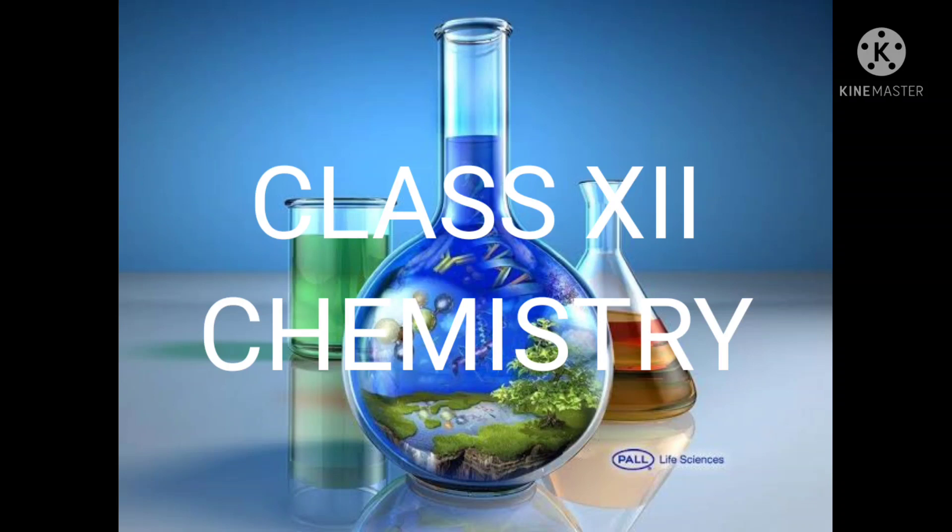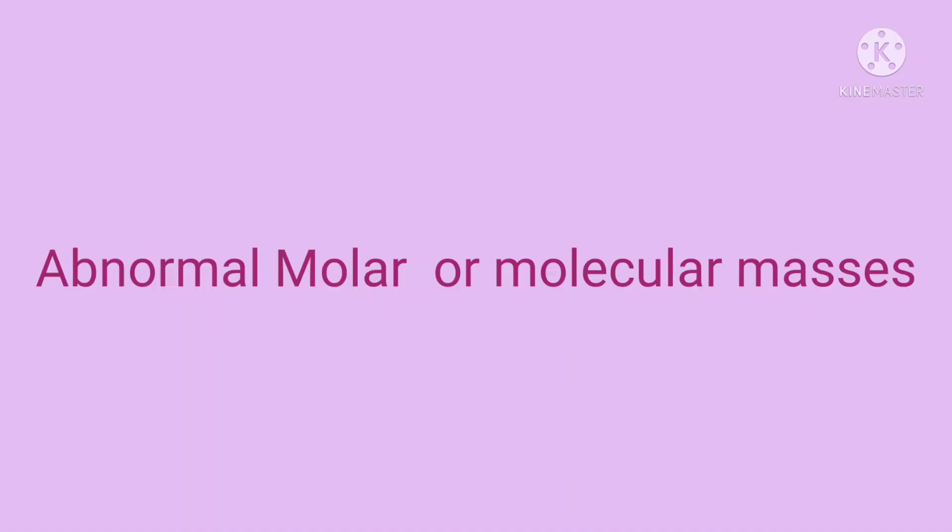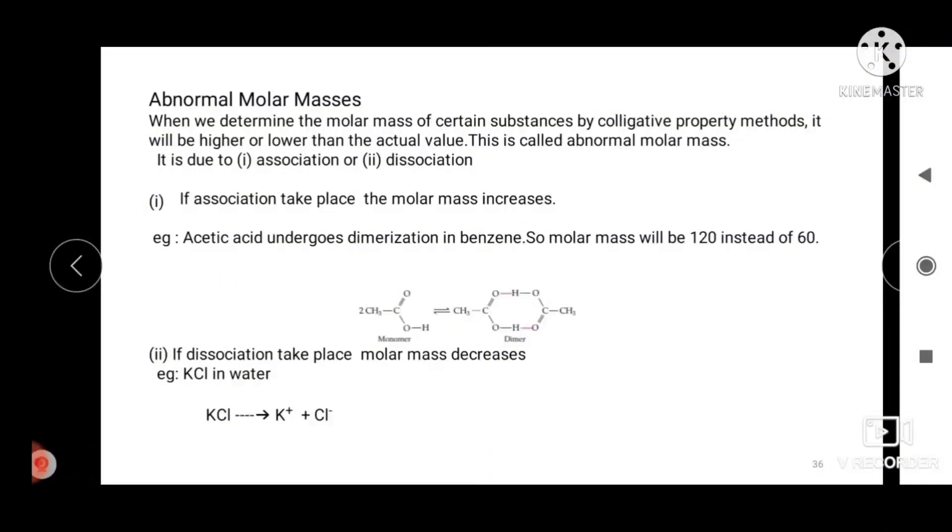In this class we will discuss about abnormal molecular or molar mass. Abnormal molar or molecular masses. We know that the colligative properties are used for the determination of molar mass of the solute. It has been observed that the value of molecular mass determined by colligative method do not always agree with the normal values. They may be due to association or dissociation of solute particles.